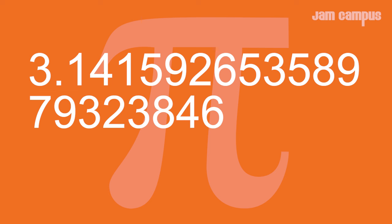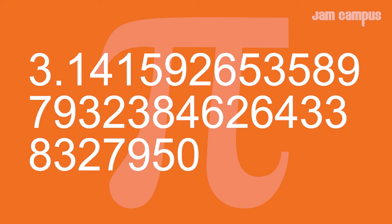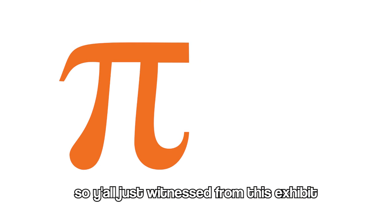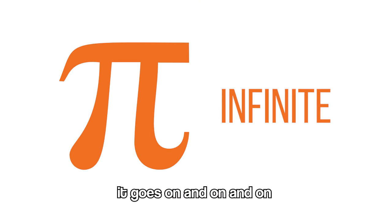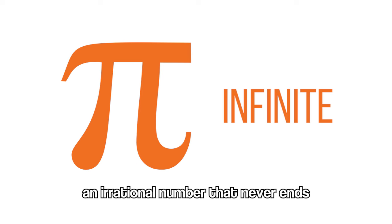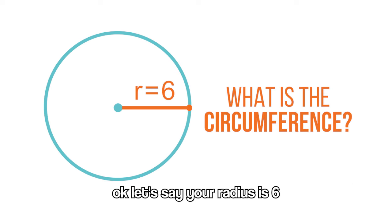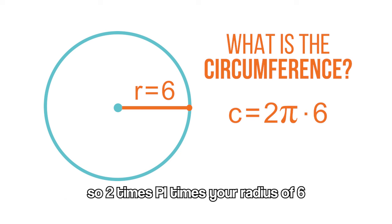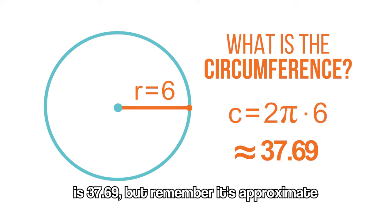So what would be the calculation of the circumference? So 2 times pi times your radius of 6 is 37.69, but remember it's approximate.